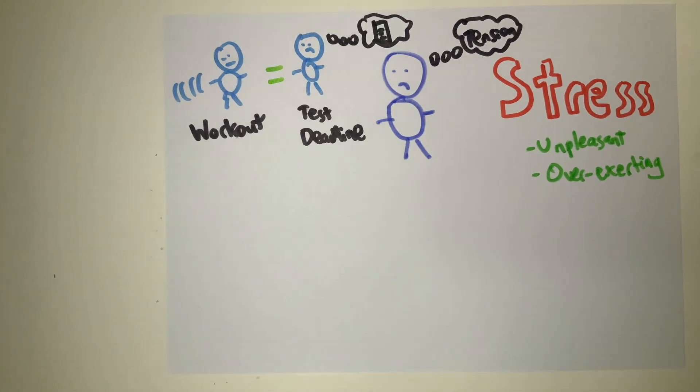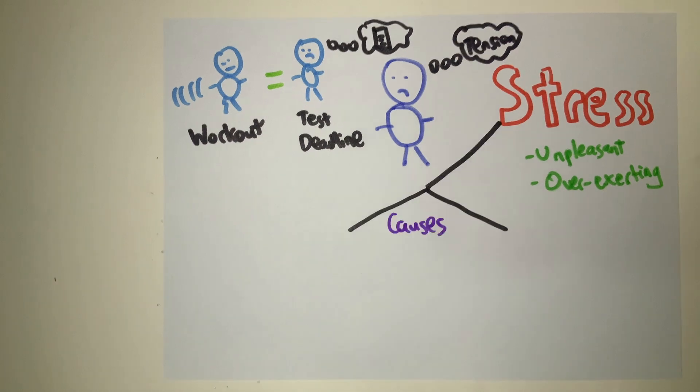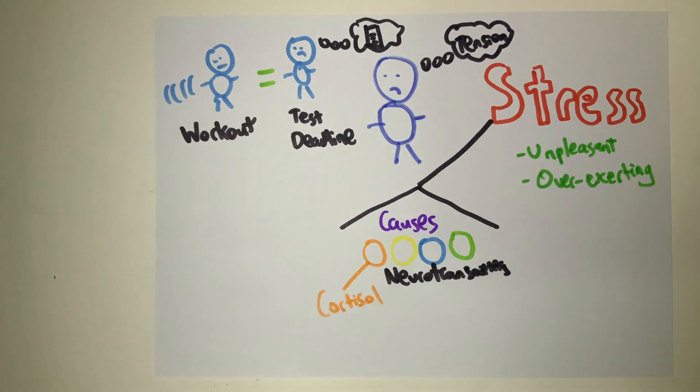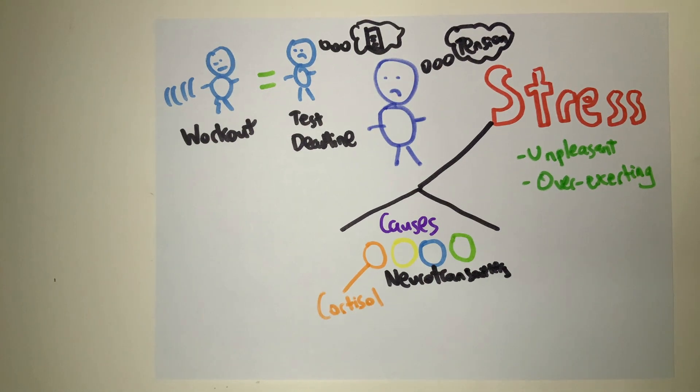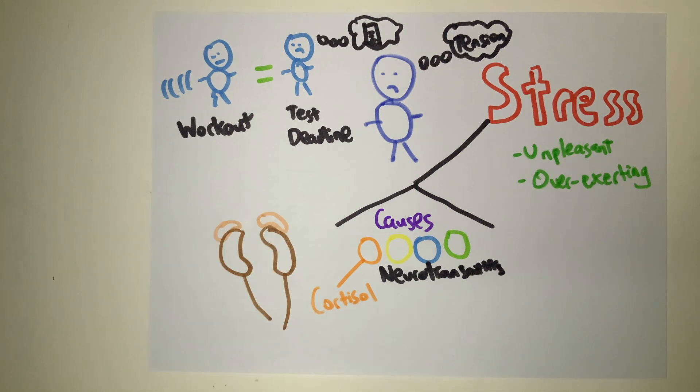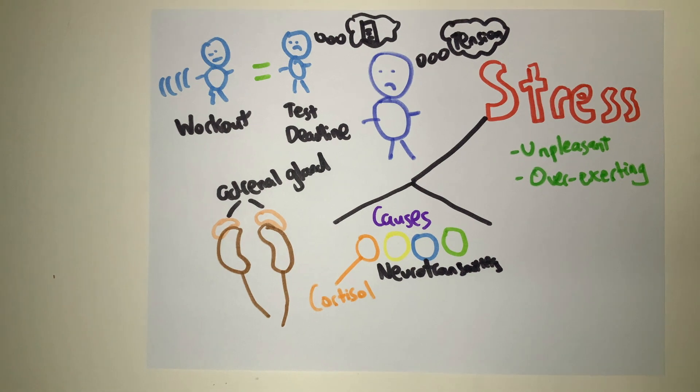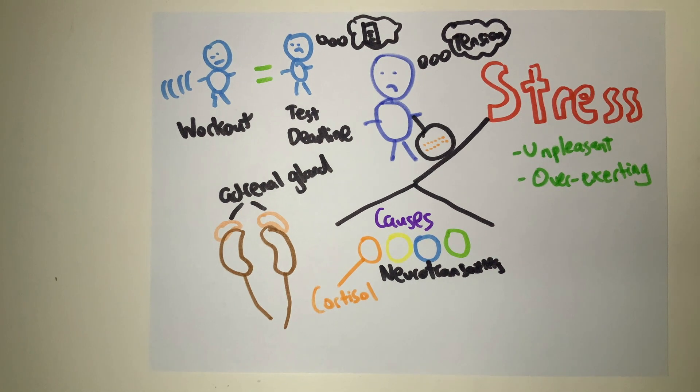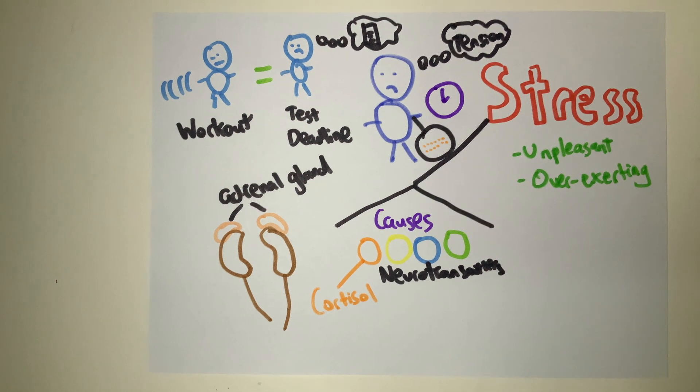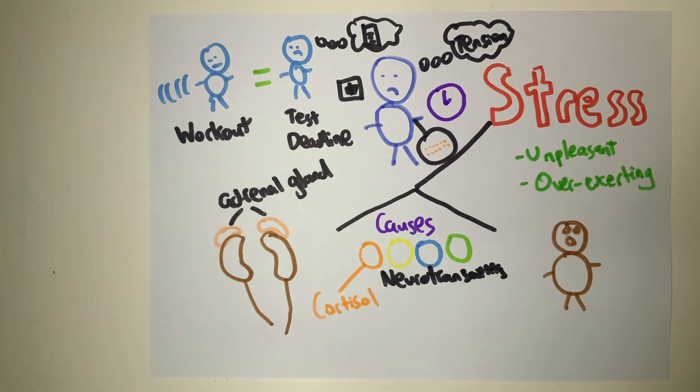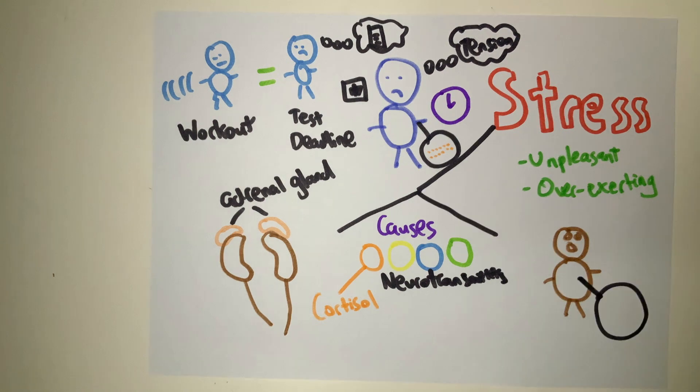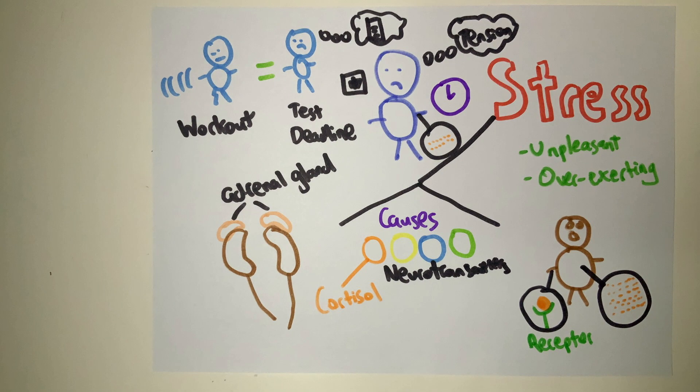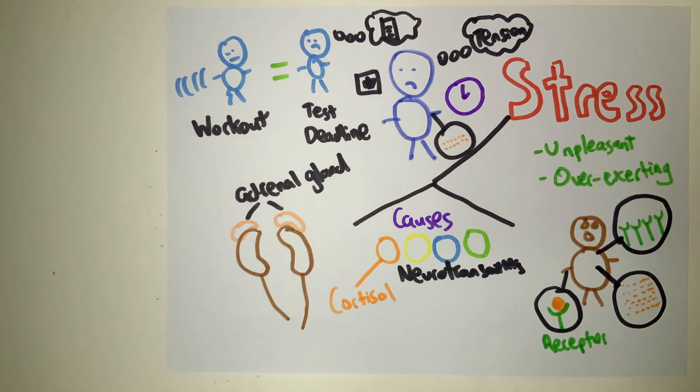Stress is caused by the stimulated release of an array of neurotransmitters. The most commonly known neurotransmitter is cortisol, which is released by the two adrenal glands located at the top of our kidneys. Cortisol is already released on a regular basis in tandem to our circadian rhythm in the early morning. However, when the body encounters an unnaturally stressful situation, more cortisol is released, which streamed outwards to bind to receptors. There are plenty of cortisol receptors in the body due to their crucial role in maintaining homeostasis.